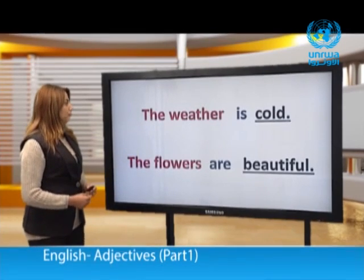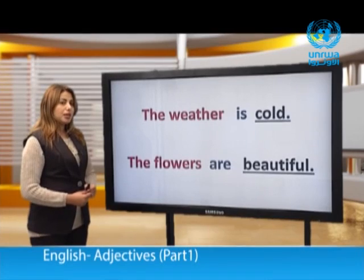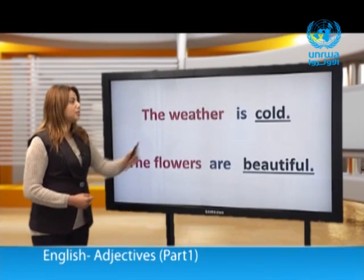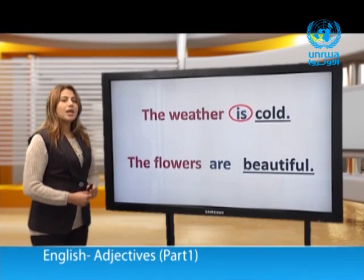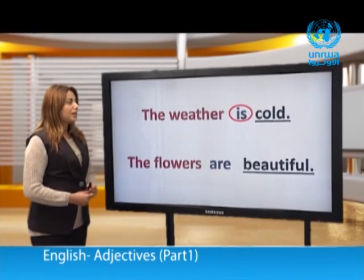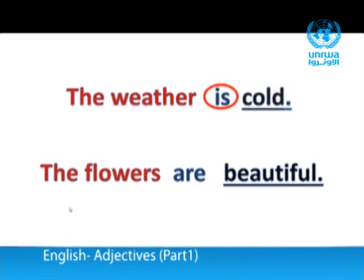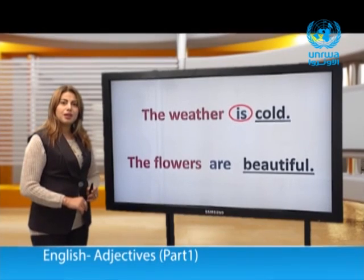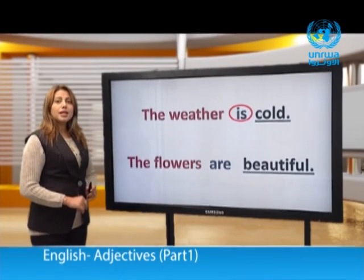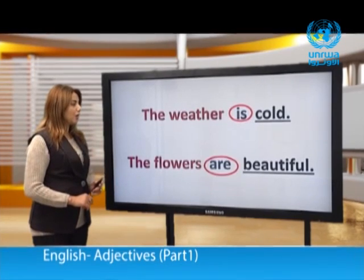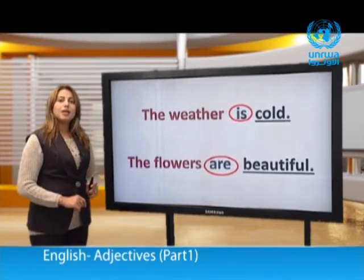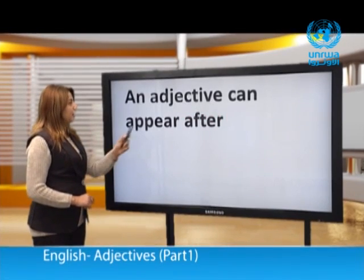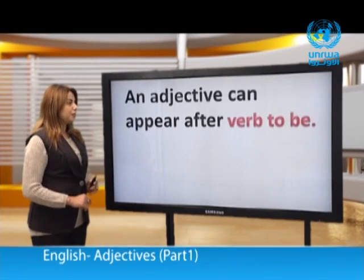Let's look at these two examples. 'The weather is cold.' Where is the adjective? The adjective is 'cold.' The verb is 'is' — we call it verb to be. The adjective came after the verb. 'The flowers are beautiful.' The adjective 'beautiful' also came after the verb 'are.' An adjective can appear after verb to be.